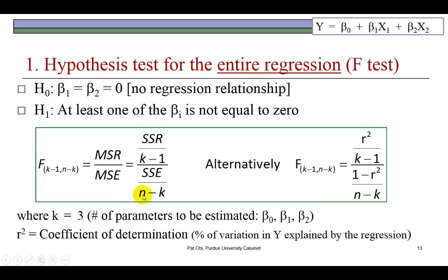n is the sample size. Now, here's an alternative formula for calculating the F statistic, whereby r² is the coefficient of determination and measures the proportion of the variation in Y that has been explained by the regression.